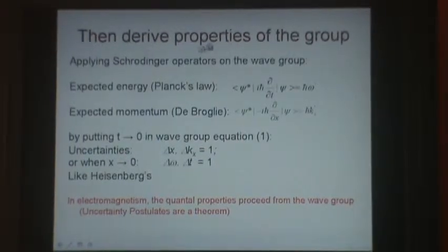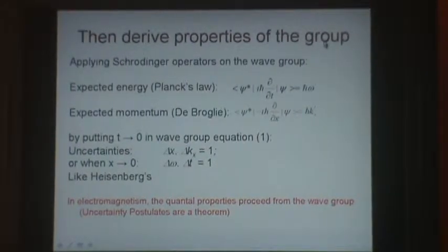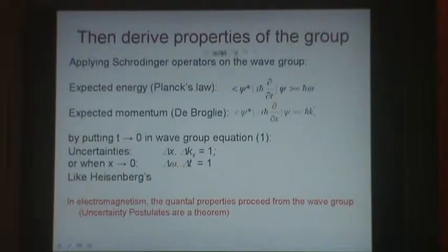We can derive several properties from this travelling wave group. First, we apply the Schrödinger operators. Here's the energy operator, and it gives us Planck's law. And here's the momentum operator, and it gives us the de Broglie relationship, because k is inversely proportional to lambda.